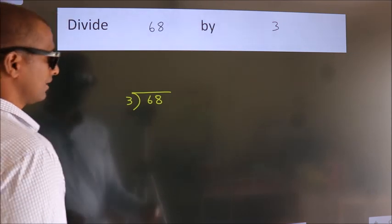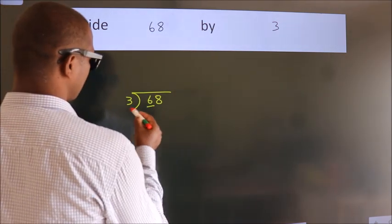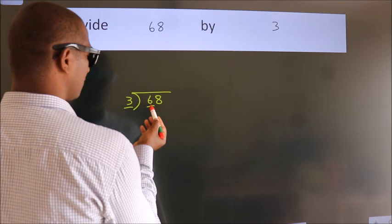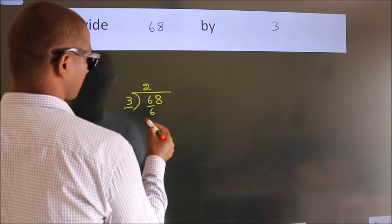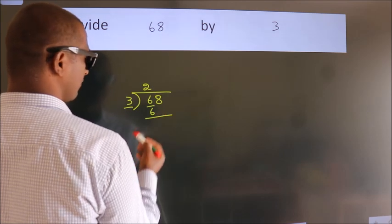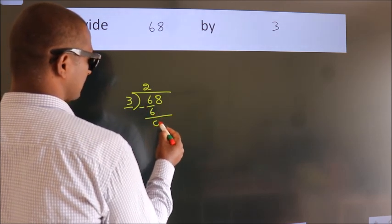Here we have 6, here 3. When do we get 6? In 3 table. 3 times 2 equals 6. Now, we should subtract. We get 0.